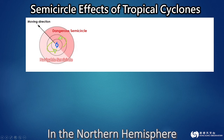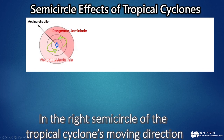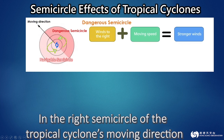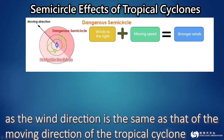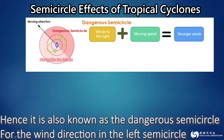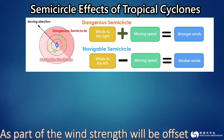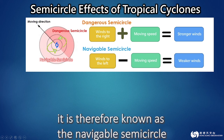In the northern hemisphere, winds surrounding a tropical cyclone turn counter-clockwise. In the right semicircle of the tropical cyclone's moving direction, as the wind direction is the same as that of the moving direction of the tropical cyclone, the winds will be stronger. Hence, it is also known as the dangerous semicircle. For the wind direction in the left semicircle, it is opposite to the moving direction of the tropical cyclone. As part of the wind strength will be offset, it is therefore known as the navigable semicircle.